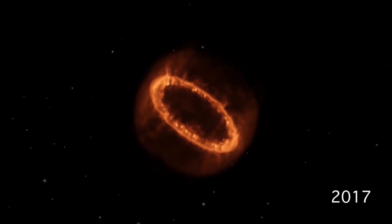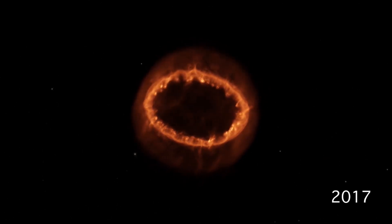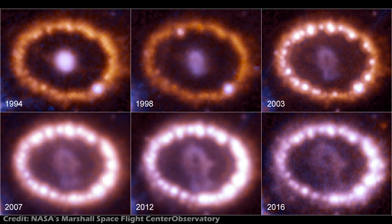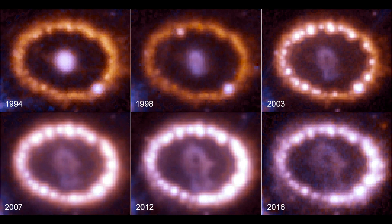SN 1987A should have resulted in a neutron star given the size of the original star. The Hubble Space Telescope has taken images of the supernova regularly since August 1990 without a clear detection of a neutron star.